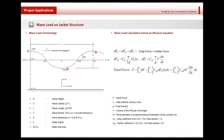Let's say this is the function for our wave load. This is the wave height, and this is the wave length for one period. The wave period T can also be specified, along with the wave altitude, which is the eta value. It will be based on this row, which is the mean sea level.